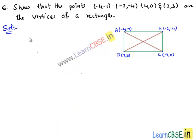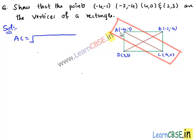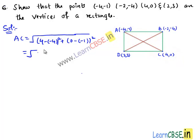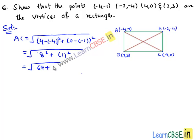Now let us find the length of diagonal AC. AC equals the square root of (x₂ - x₁)² which is (4 - 4)² plus (y₂ - y₁)² that is (0 - 1)², which equals the square root of 8² plus 1², equal to the square root of 64 plus 1, which is equal to √65. Hence we got the length AC as √65 units.